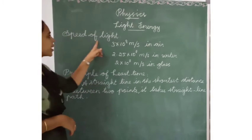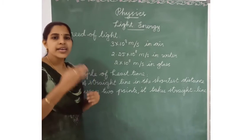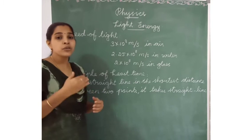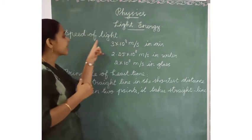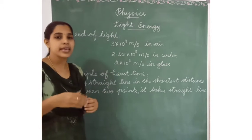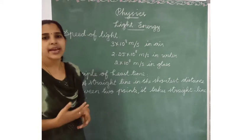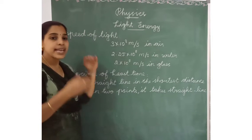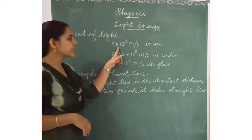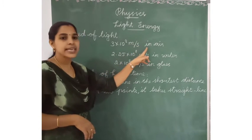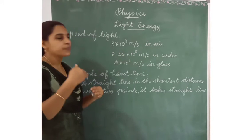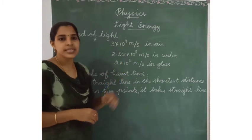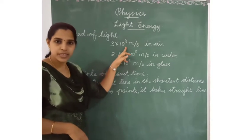Today we are going to study about the speed of light. Light always travels in a straight line. We can measure the speed of light just as we measure temperature, length, mass, and weight. Light travels in a straight line with a speed of 3 × 10⁸ meters per second in air. This value is very important and we have to remember it.